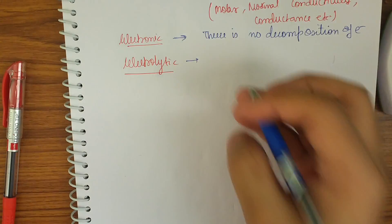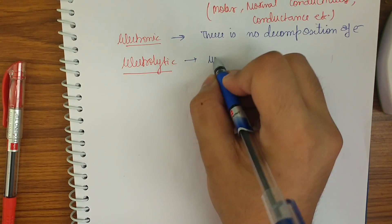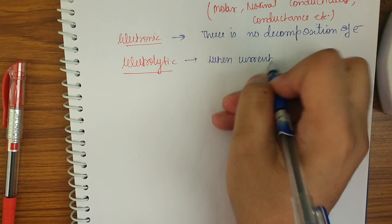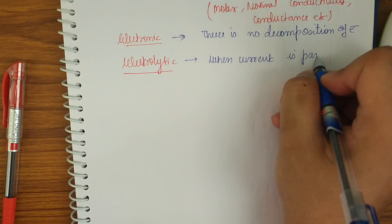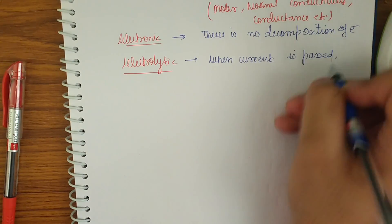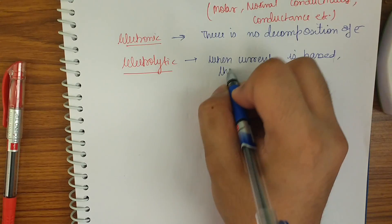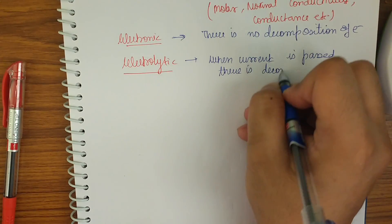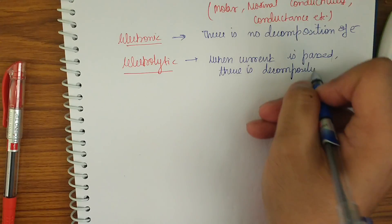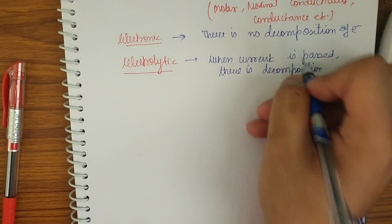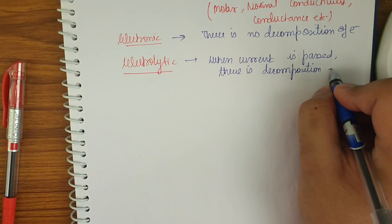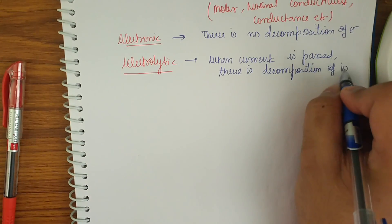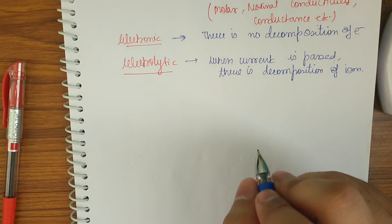Now, what are electrolytic conductors? When current is passed, we can see the decomposition of particular ions — there is decomposition of ions. For example, strong acid plus weak base, or weak acid plus strong base — these are cases where we have electrolytic conductors.